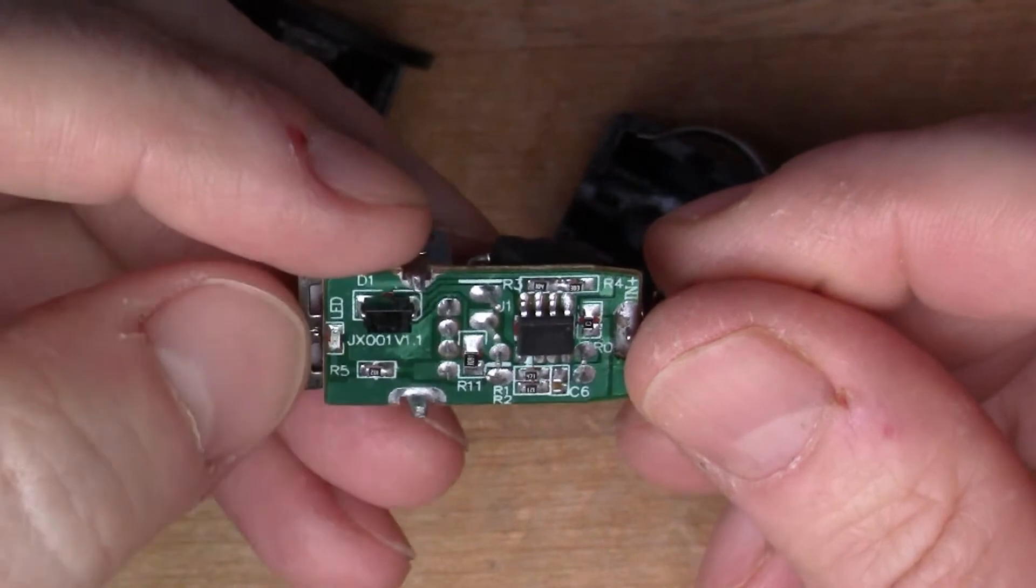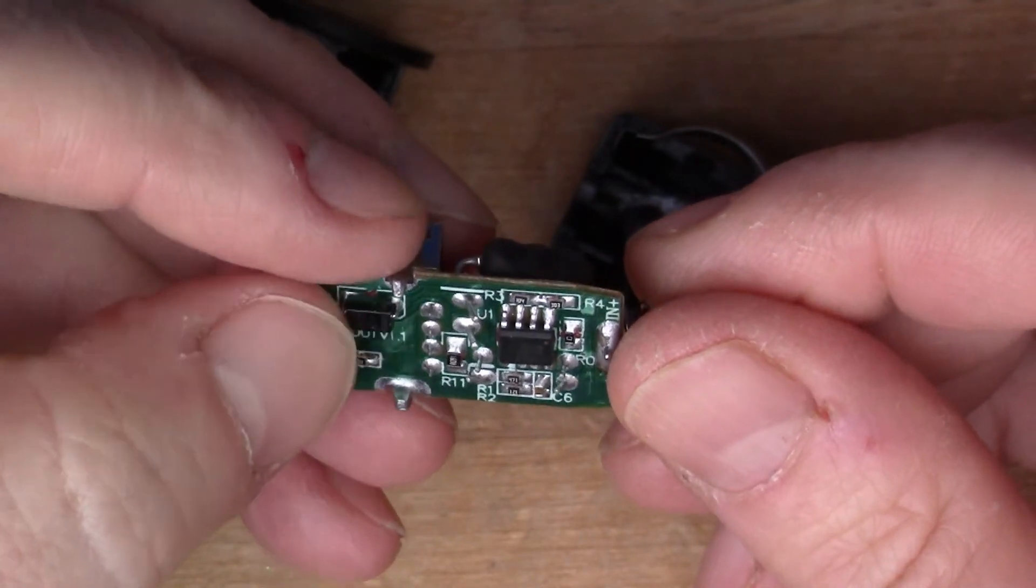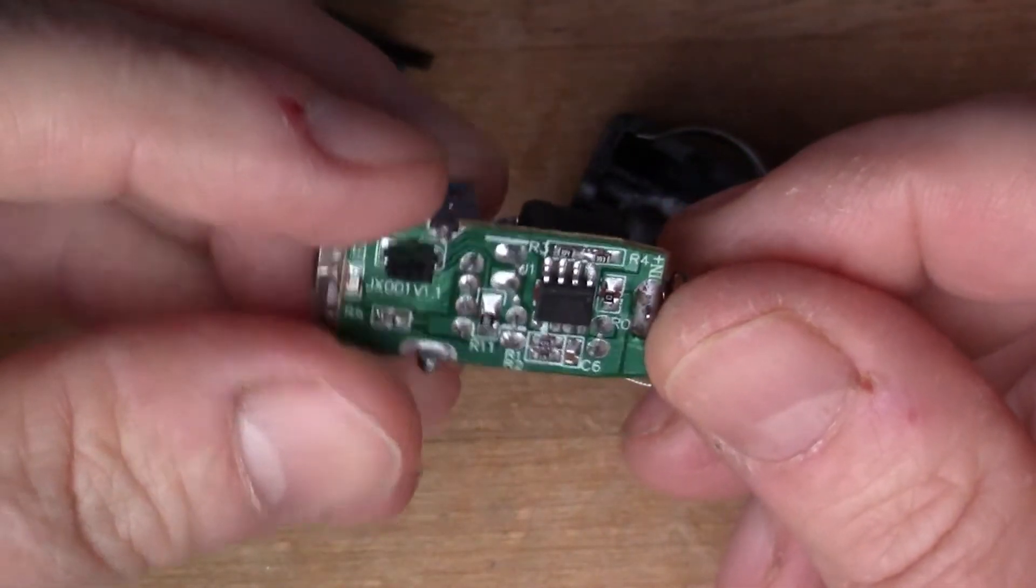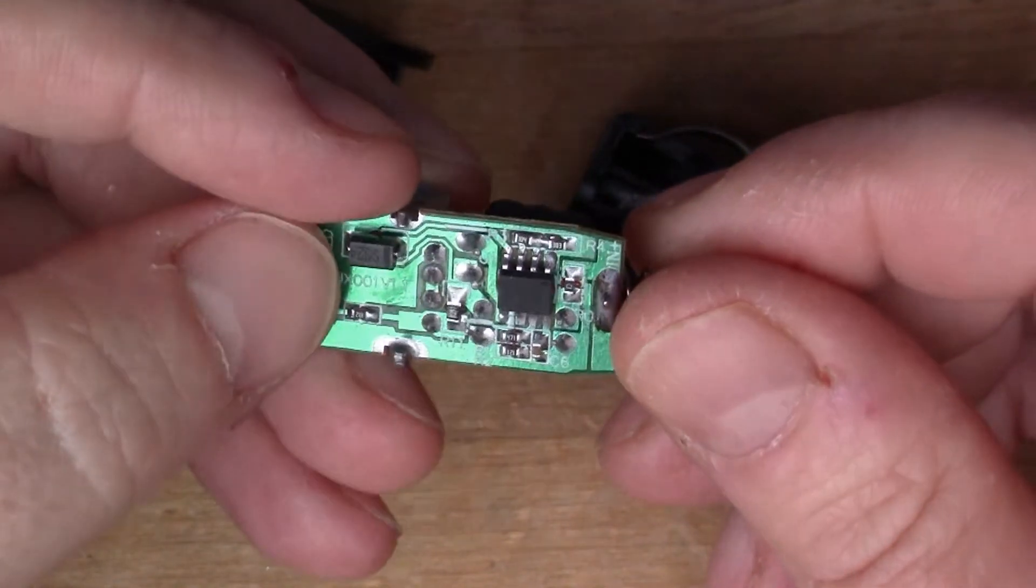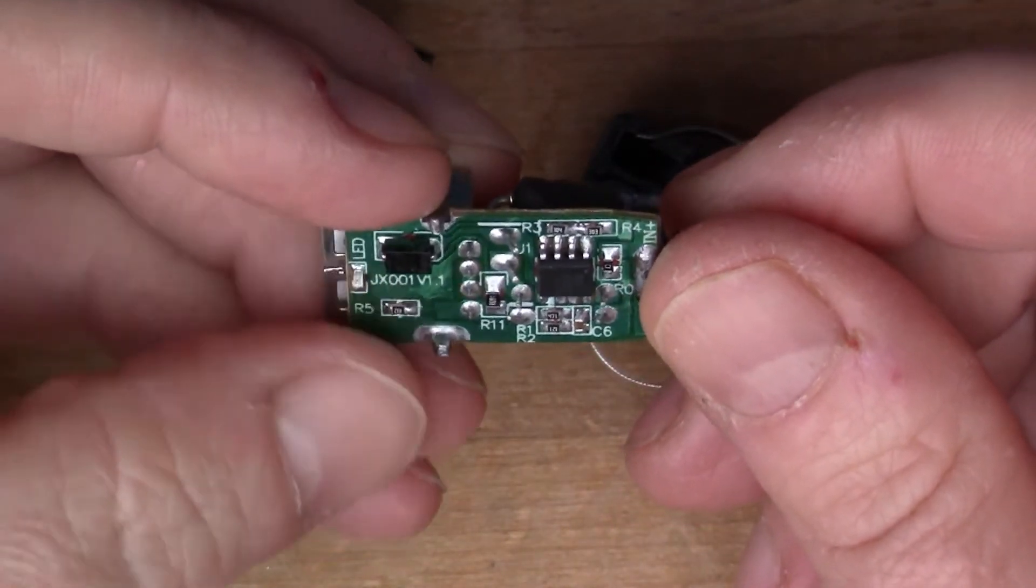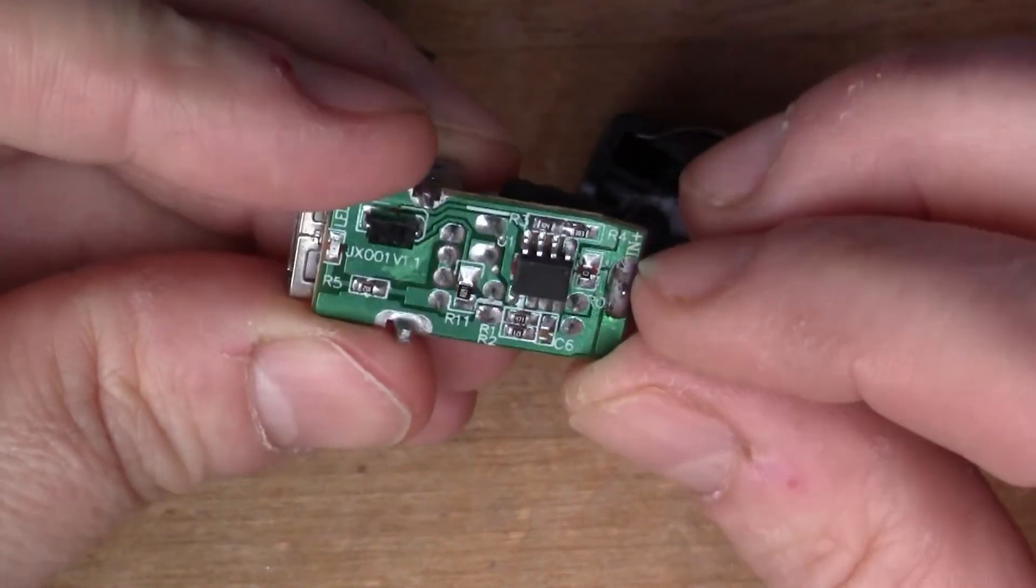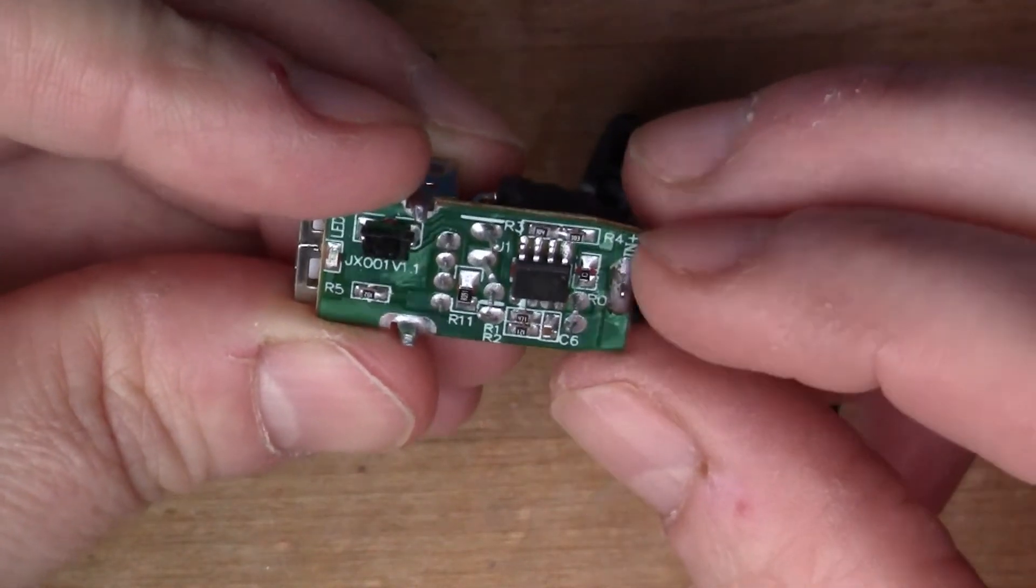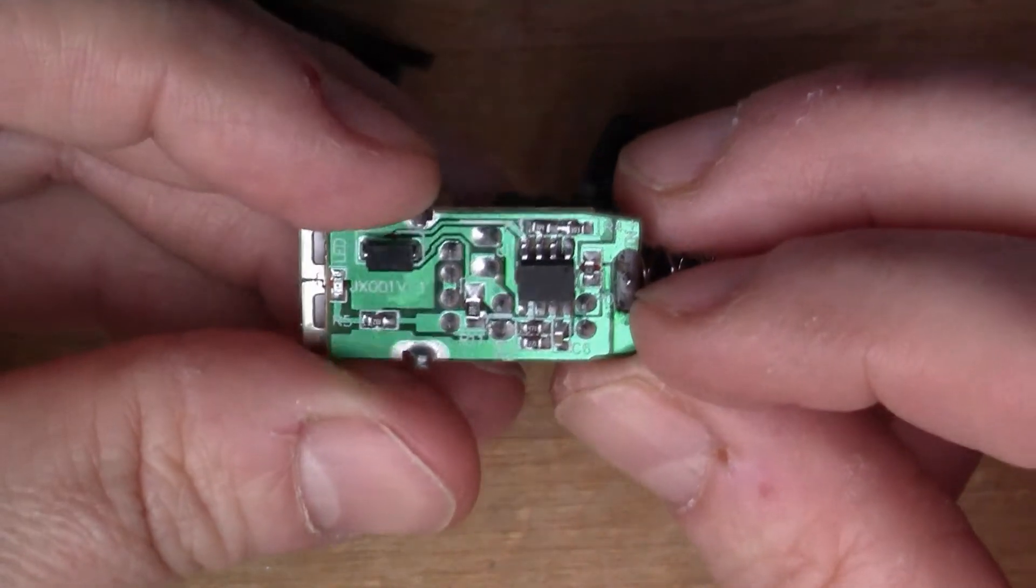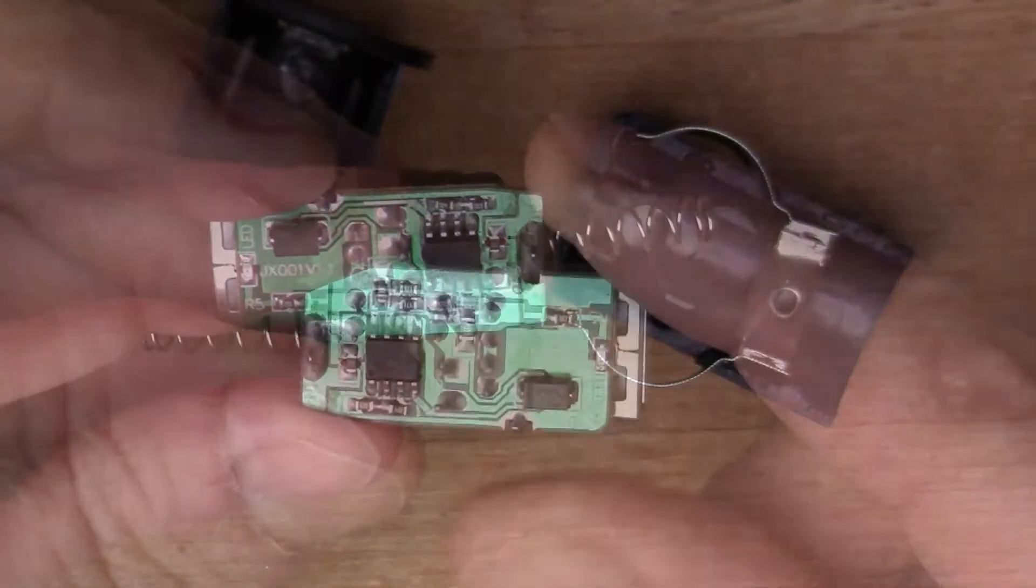If we flip it over, underneath we've got a diode here, so I guess that's probably to stop it being connected reverse polarity and destroying it. So there's a diode and then there's a chip. It looks like there are a couple of tiny surface mount capacitors there as well. Let's have a look what this chip is.